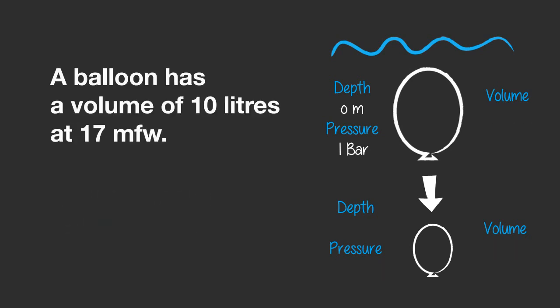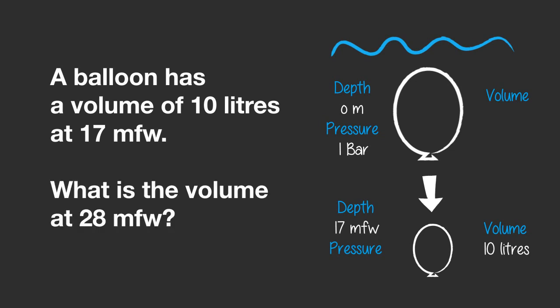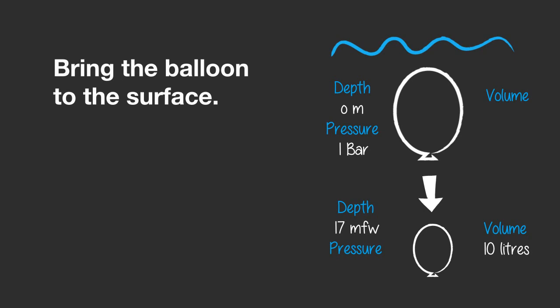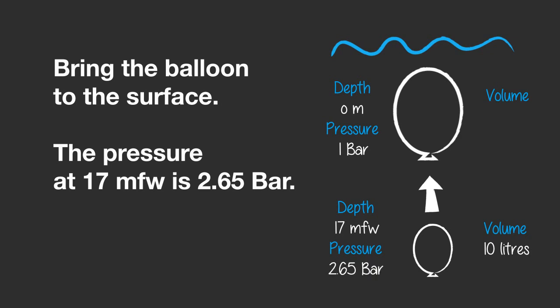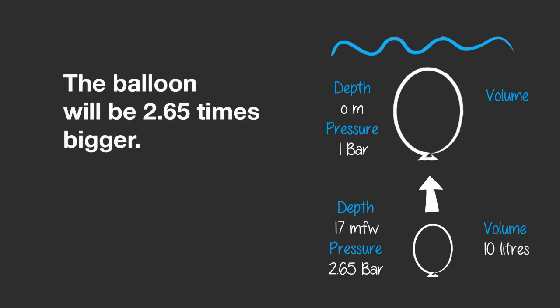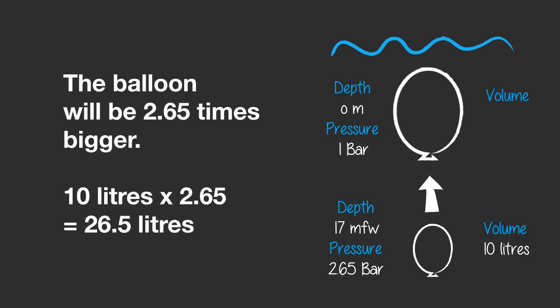Let's do the same example in freshwater. A balloon has a volume of 10 liters at 17 meters of freshwater. What is the volume at 28 meters of freshwater? Again, first bring the balloon to the surface. The pressure at 17 meters of freshwater is 2.65 bar: 17 divided by 10.3 equals 1.65 bar, plus 1 bar of the surface pressure. So the balloon will be 2.65 times bigger. 10 liters multiplied by 2.65 equals 26.5 liters. At the surface, the balloon has a volume of 26.5 liters.